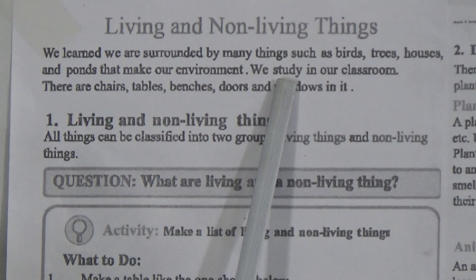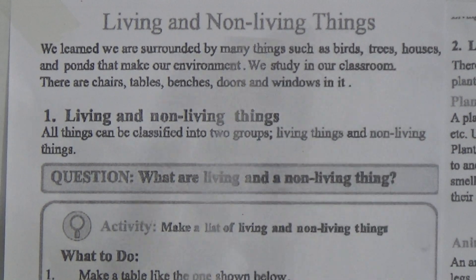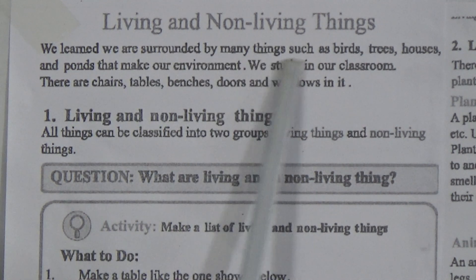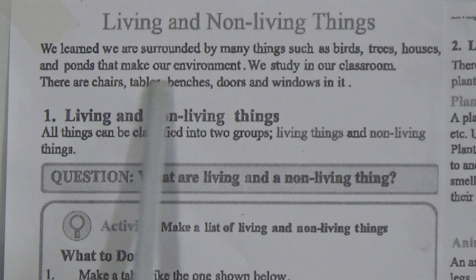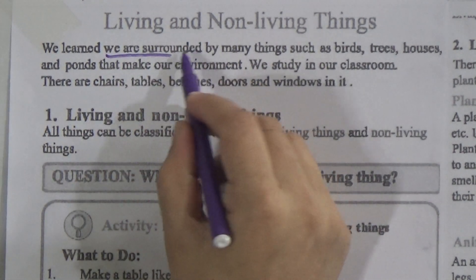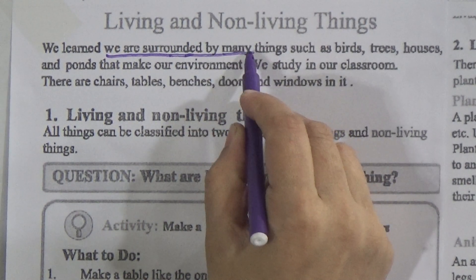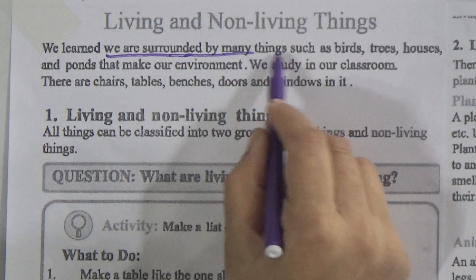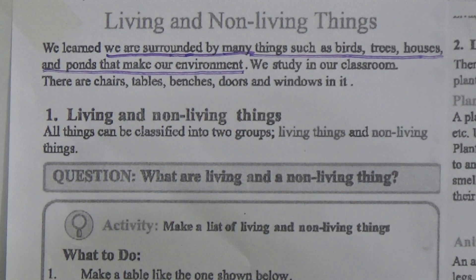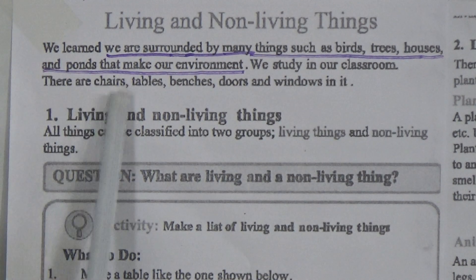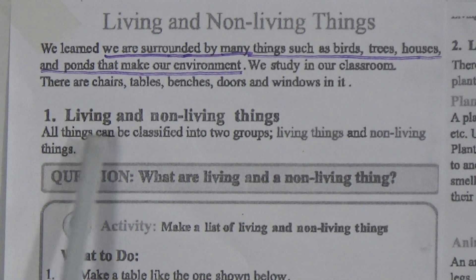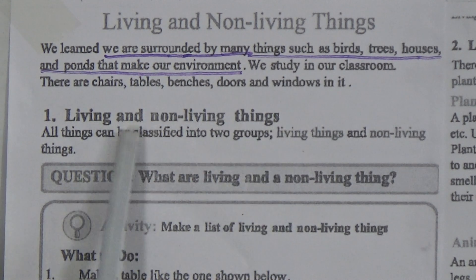We are surrounded by many things such as birds, trees, houses and ponds that make our environment. Underline this line - it is important for fill in the blanks. Now, we study in our classroom - there are chairs, tables, benches, doors and windows in it.